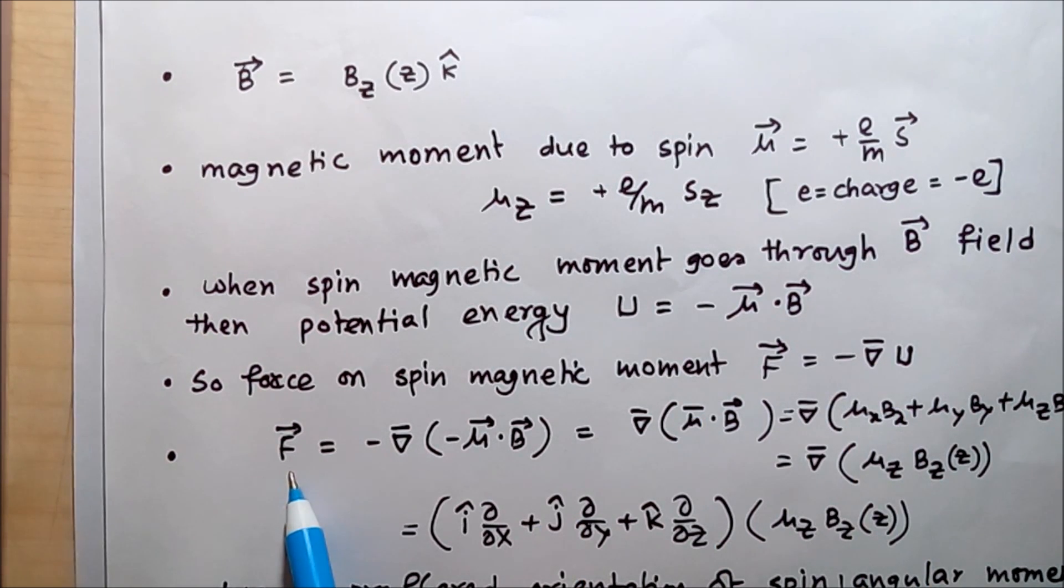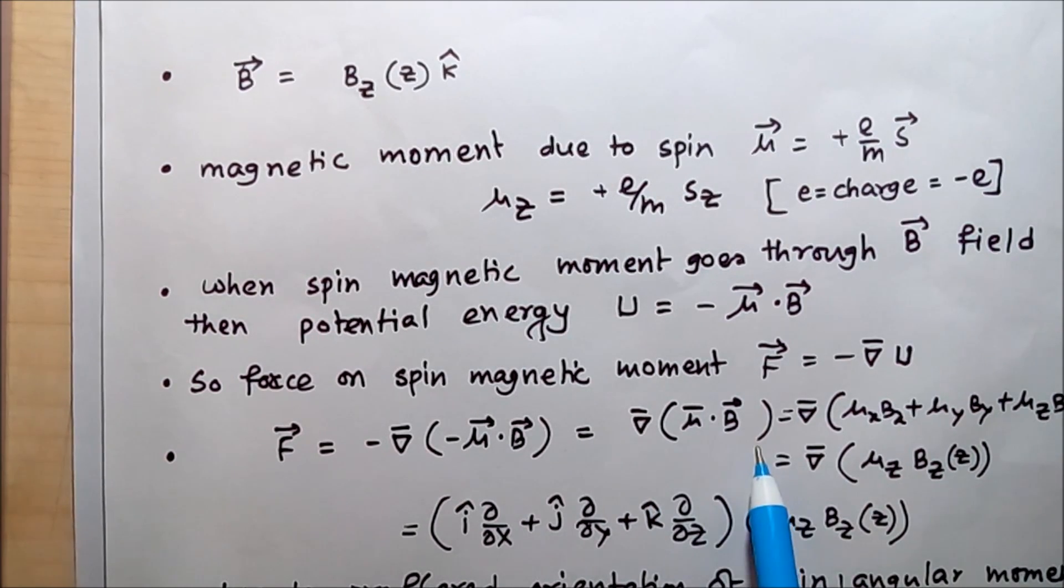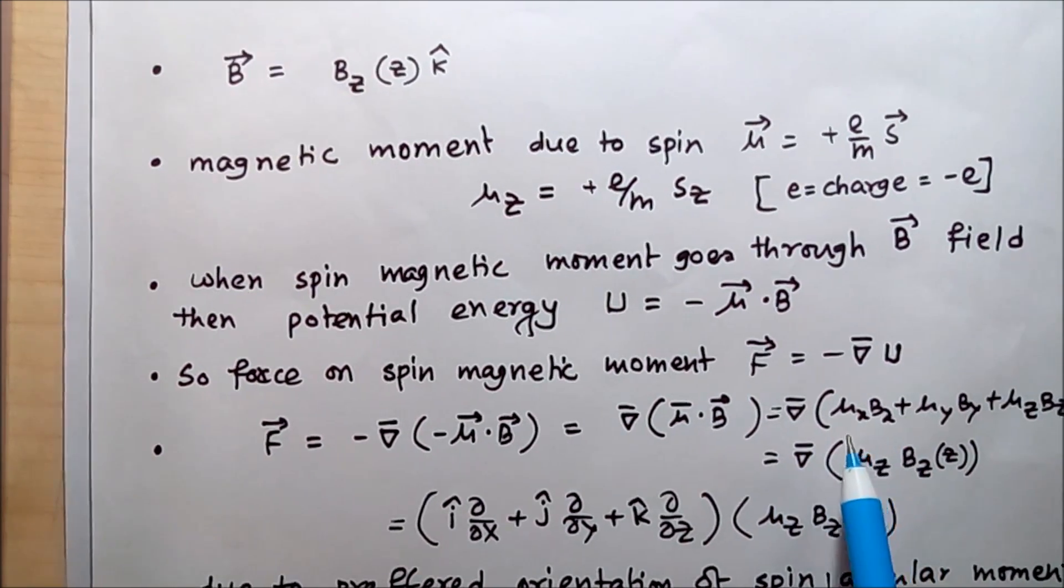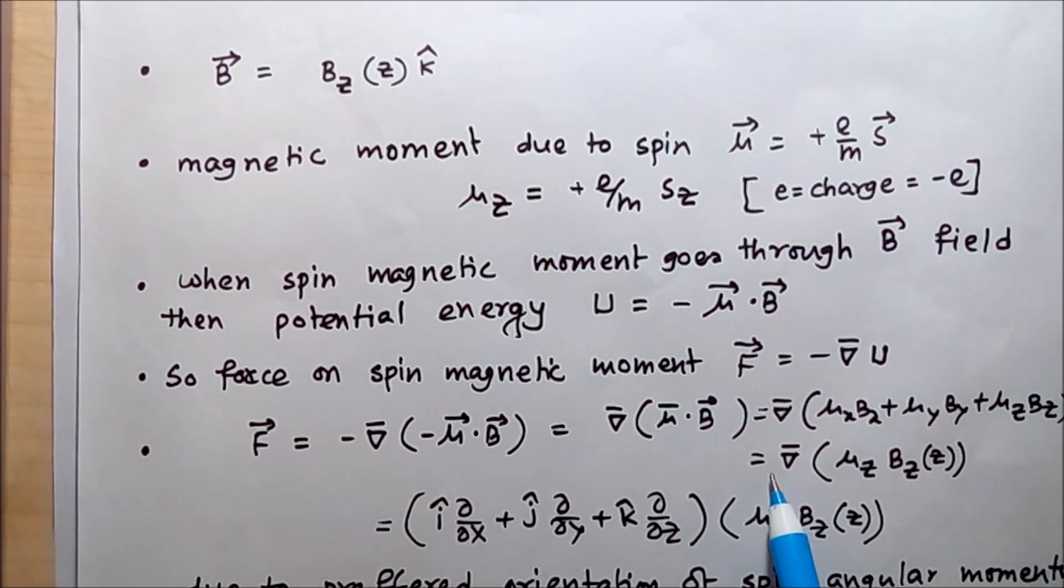The force equals -∇(-μ·B) = ∇(μ·B). We can write μ·B as μ_x B_x + μ_y B_y + μ_z B_z. As the magnetic field is only in the z-direction, B_x and B_y equal zero, so the force on the electron equals the gradient of μ_z B_z.